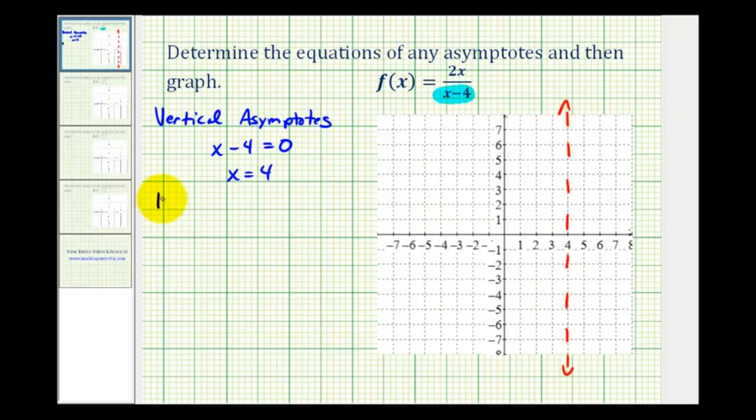Now to determine the horizontal asymptote, we need to determine the limit of the function as x approaches positive or negative infinity. There's a shortcut method for determining this limit. If the degree of the numerator and denominator are the same, then the limit is equal to the ratio of the leading coefficients, which in this case would be two over one, which is equal to two. So the horizontal asymptote of this function would be y equals two.